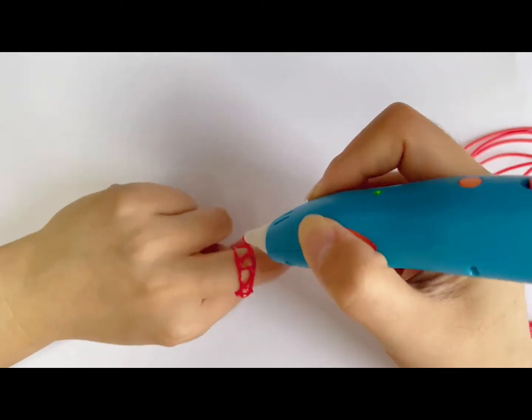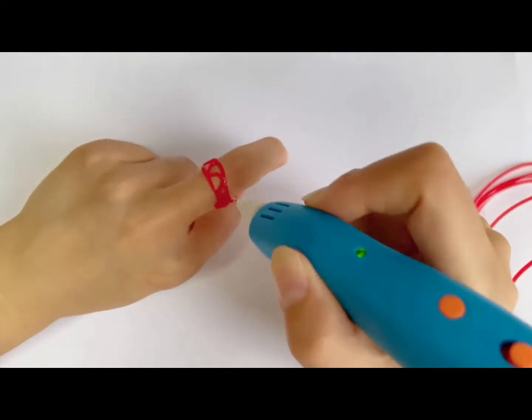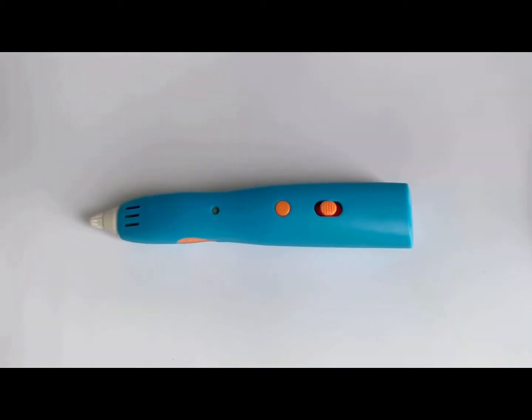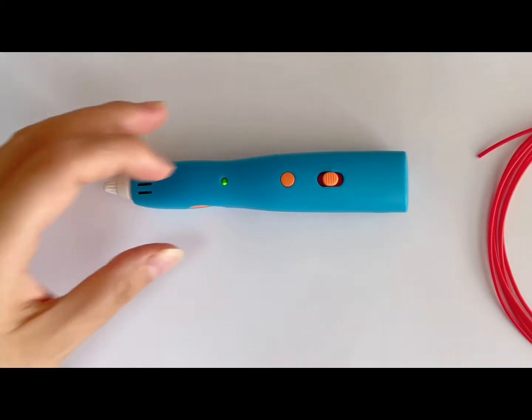It's quite easy to use. First, switch the speed button to one or two position. The indicator will flash and heating will start automatically. When the indicator stops flashing, press the loading button to start.